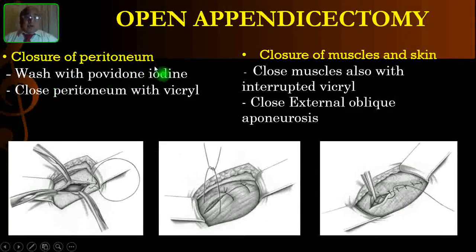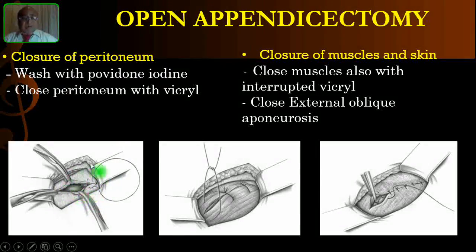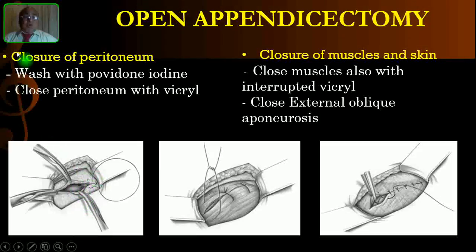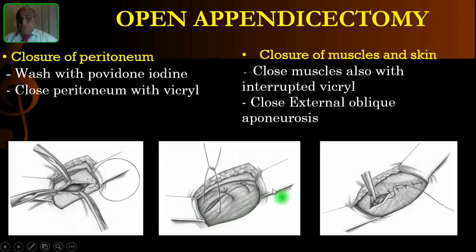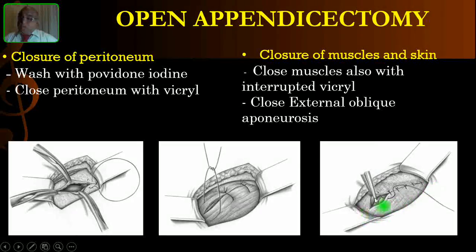Before closing the peritoneum, wash the local peritoneal cavity with povidone-iodine — not the entire general peritoneal cavity, only the local area. Close the peritoneum with vicryl using a continuous suture. Close both muscles with vicryl using interrupted sutures. Finally, close the external oblique aponeurosis with either continuous or interrupted sutures, and close the skin with a subcuticular stitch.